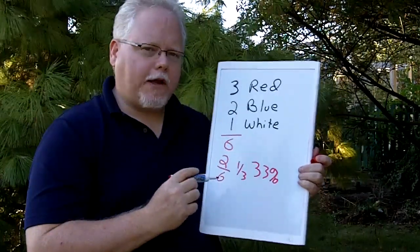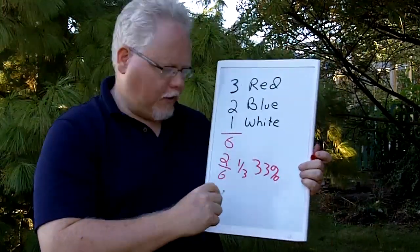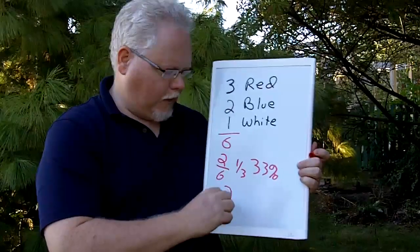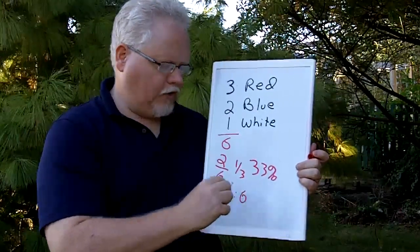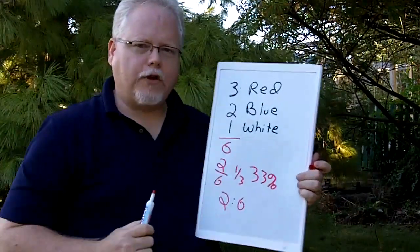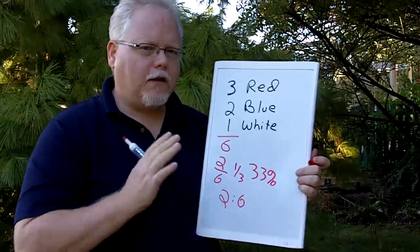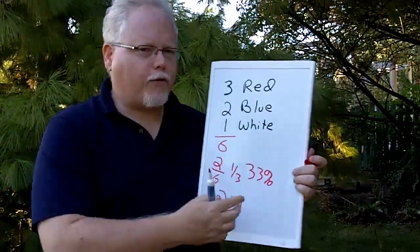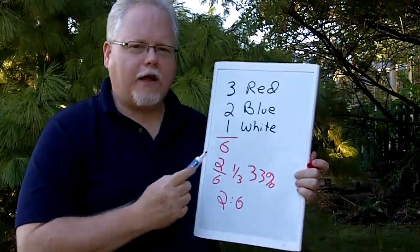When you see probability like this, you'll probably see it also a question where it'll say there's a two in six chance of grabbing a blue sock. Pretty easy. One in three, 33%, or two in six, that's your answer.